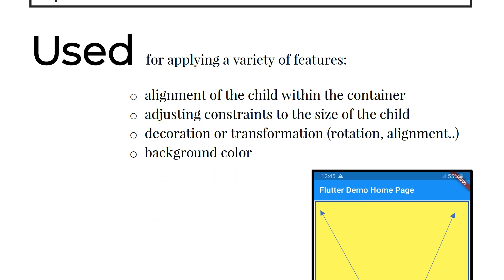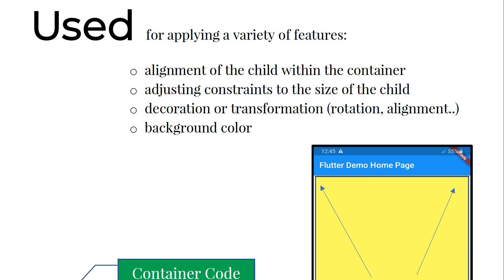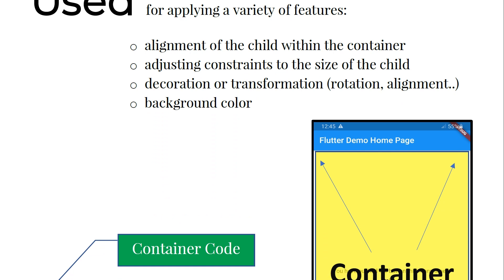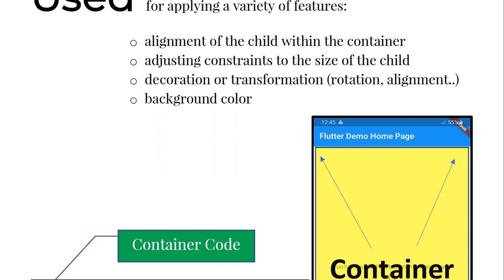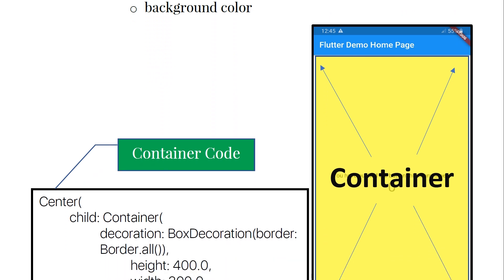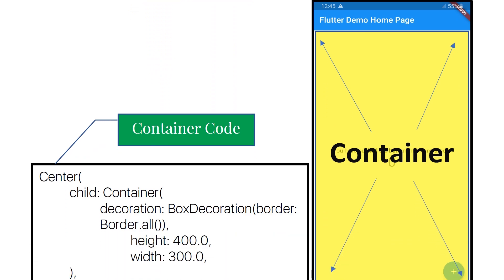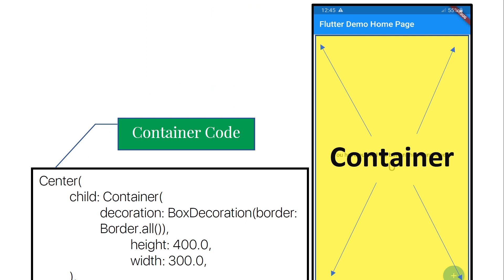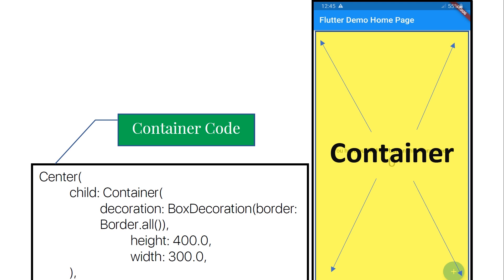We use containers for applying a variety of features like alignment of the child within the container, adjusting constraints to the size of the child, and decoration or transformation, rotation, alignment, or background colors. As you can see in this figure, the container is a widget that contains all its children.